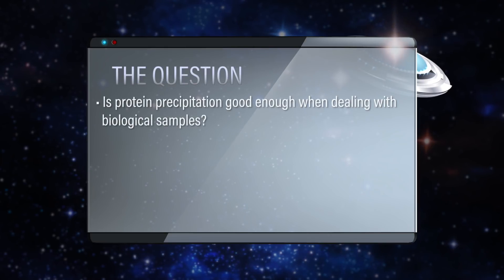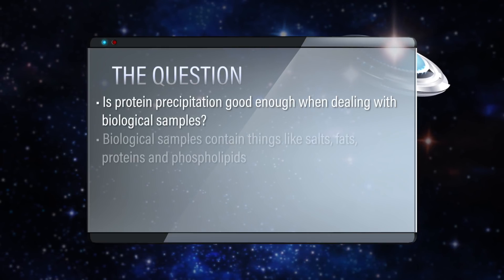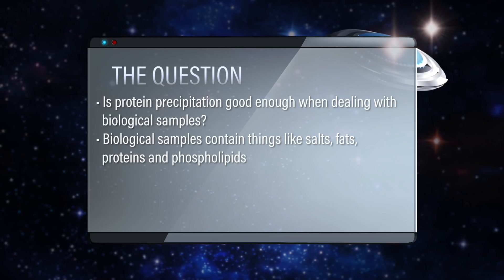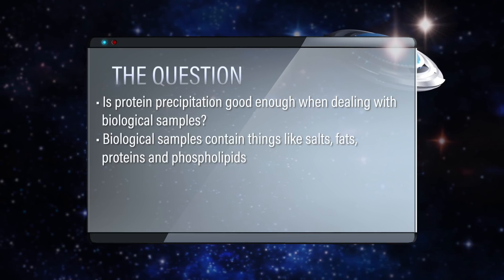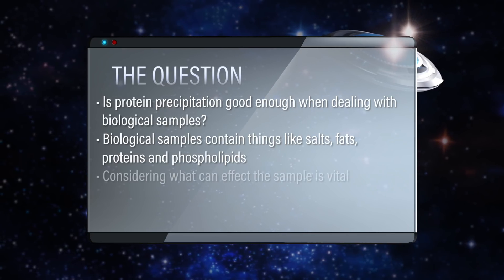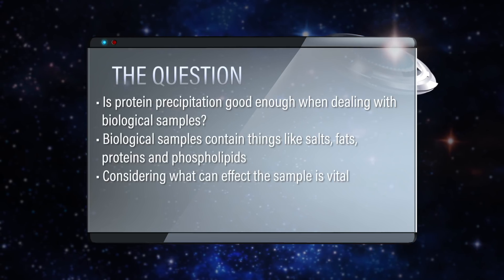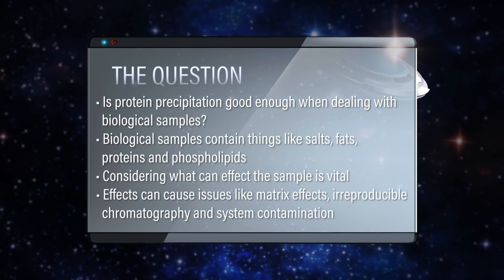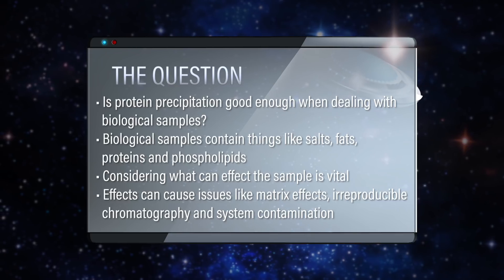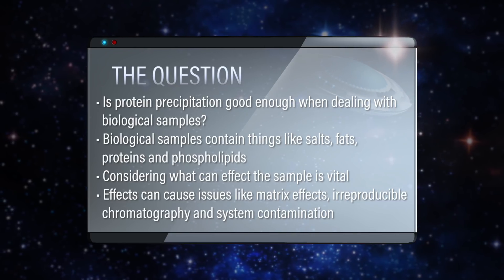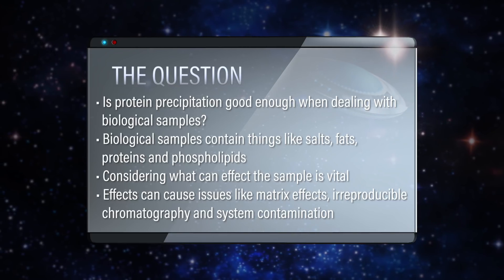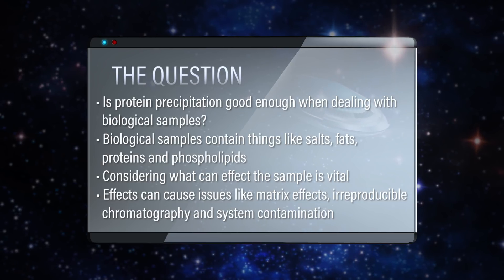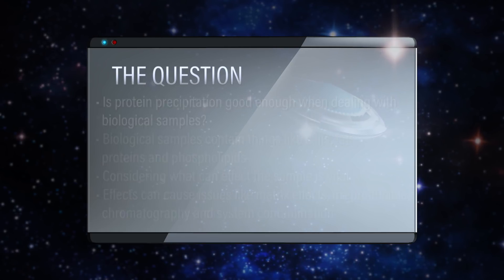We know that biologics have things in there like salts, fats, proteins, even phospholipids. But we have to think about how those things are going to affect our sample, because they can cause things like matrix effects, ion suppression, and chromatography that's not reproducible.